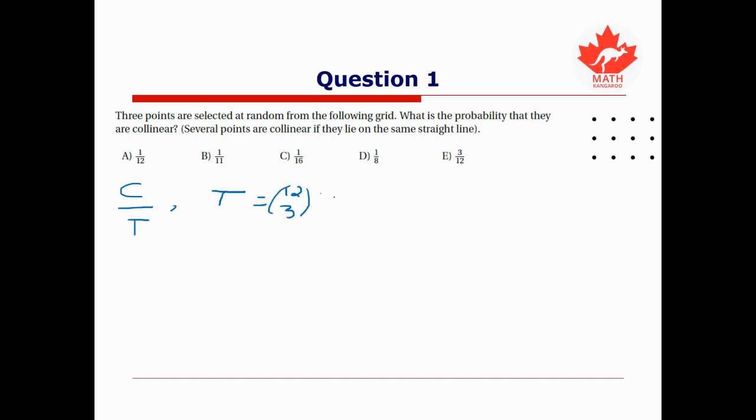Remember that this is the quantity 12 factorial divided by 3 factorial and 12 minus 3 factorial. In other words, this is 12 factorial divided by 3 factorial and 9 factorial. And once you simplify this, it should just work out to 220.